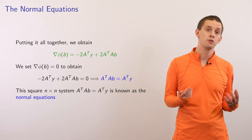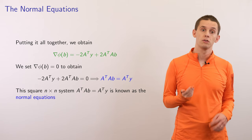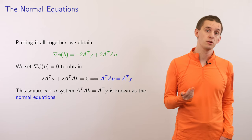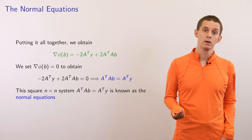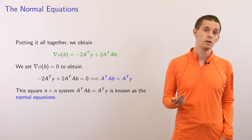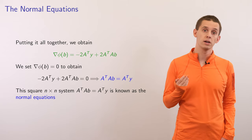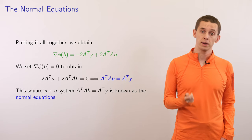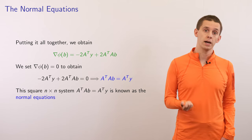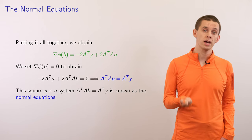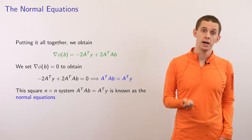Combining the two derivative terms, the gradient of phi equals minus 2A^T Y plus 2A^T AB. Setting grad phi equal to zero, we conclude that A^T AB equals A^T Y. Comparing to our original system AB equal Y, after going through this argument we get the same equation pre-multiplied by A^T on either side. Because A^T A is a square matrix and potentially invertible, we actually end up with a potentially solvable system. These equations are referred to as the normal equations.